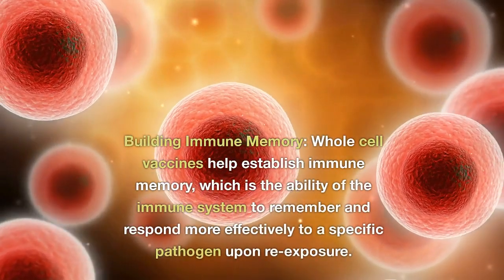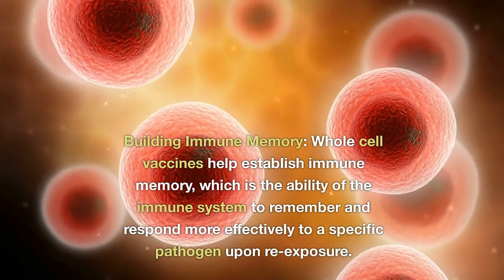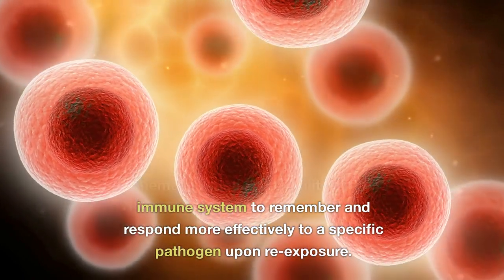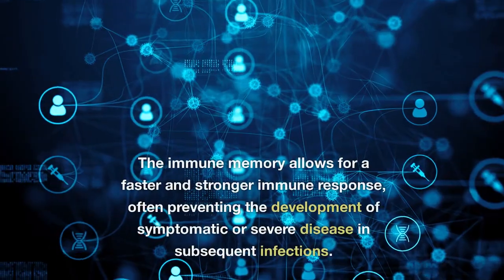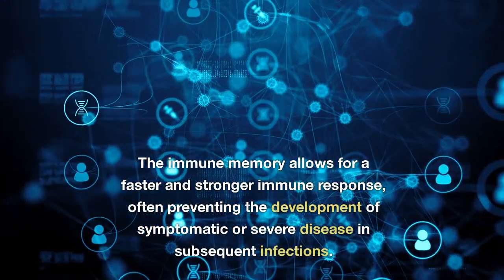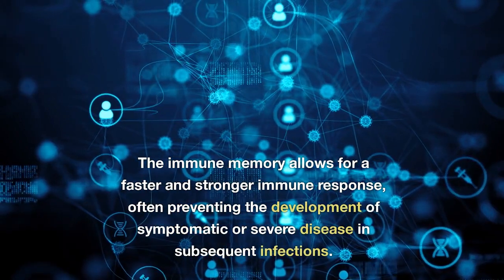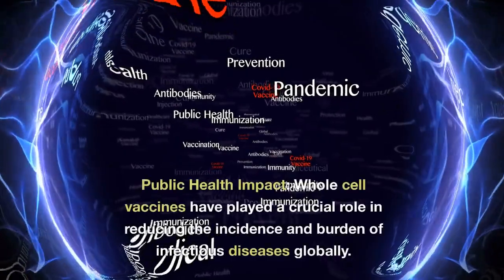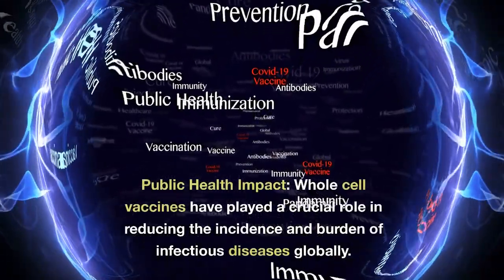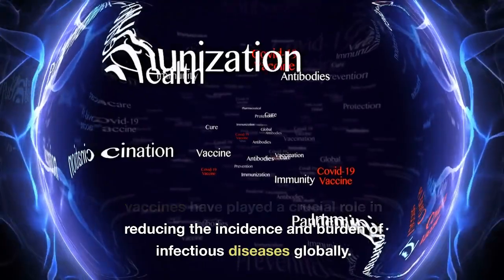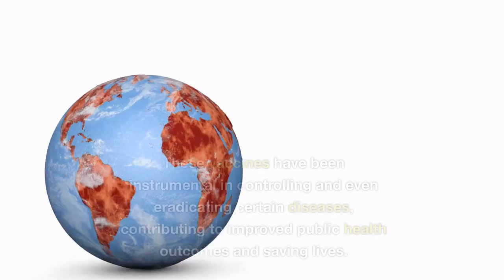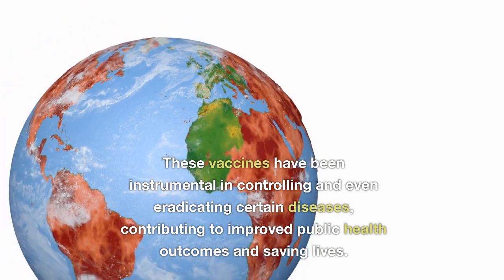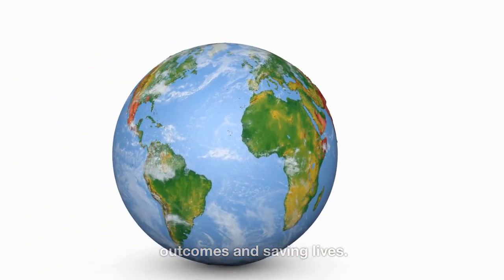Building immune memory: whole cell vaccines help establish immune memory, which is the ability of the immune system to remember and respond more effectively to a specific pathogen upon re-exposure. The immune memory allows for a faster and stronger immune response, often preventing the development of symptomatic or severe disease in subsequent infections. Public health impact: whole cell vaccines have played a crucial role in reducing the incidence and burden of infectious diseases globally, and have been instrumental in controlling and even eradicating certain diseases, contributing to improved public health outcomes and saving lives.